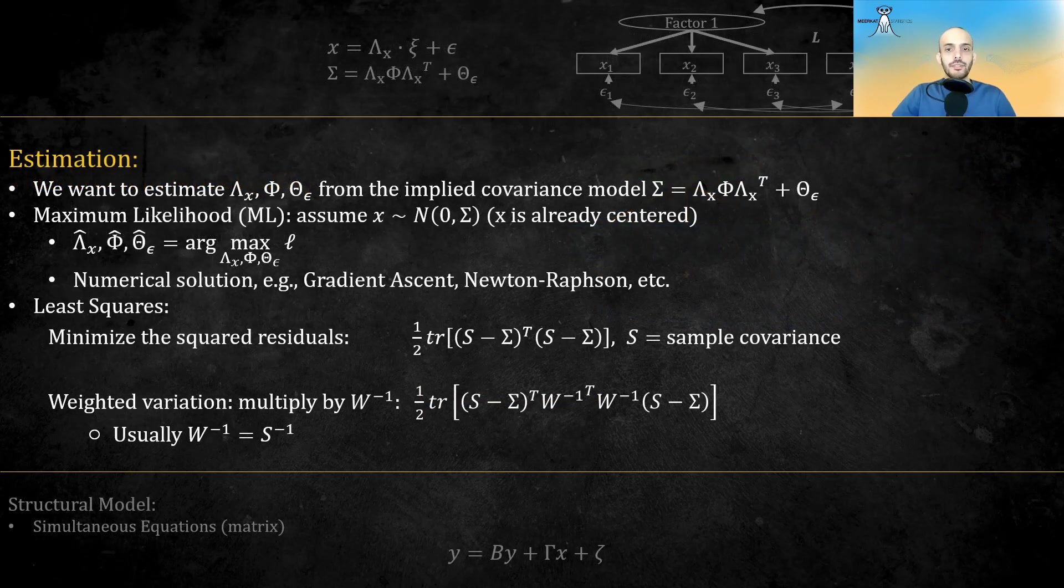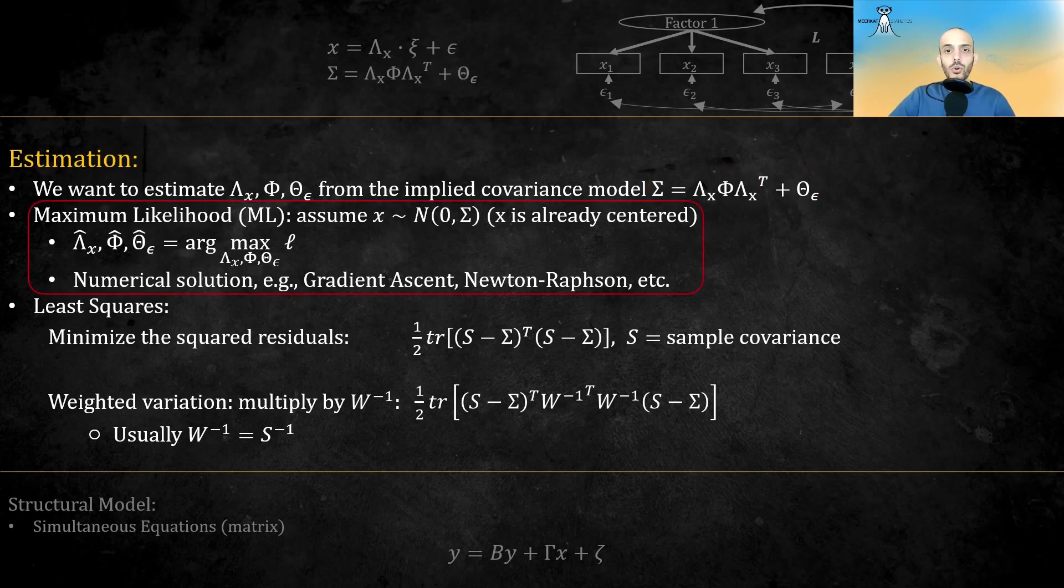How do we estimate the parameters? We have a few parameters, lambda X, phi, theta epsilon, and we wish to estimate them from the implied covariance structure given here. As explained in the previous video, we can either use maximum likelihood, by assuming normality, or least squares, either the unweighted or the weighted version. In both cases, there are usually no closed form solutions, but rather the solutions are numerical, that is, using gradient descent, or Newton-Raphson, etc.